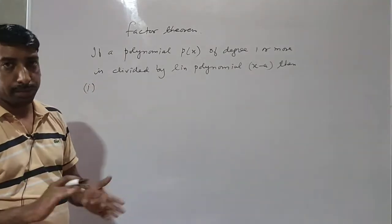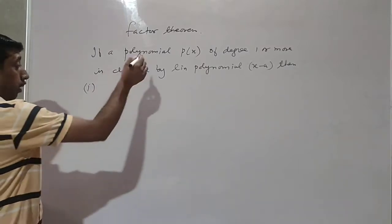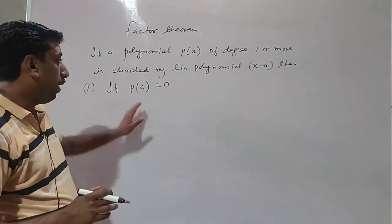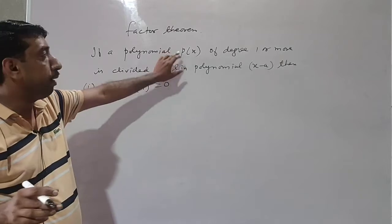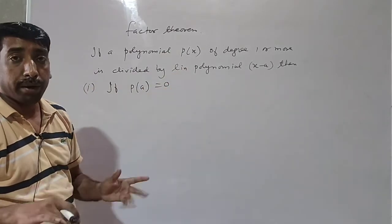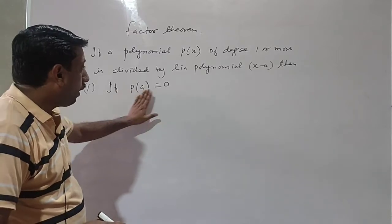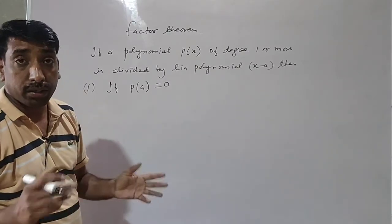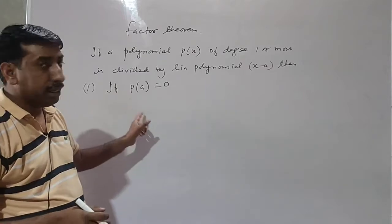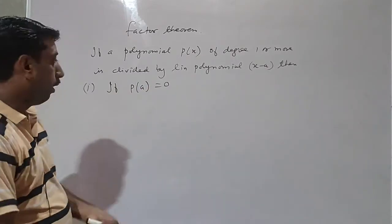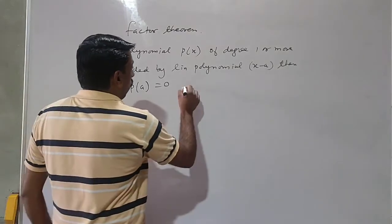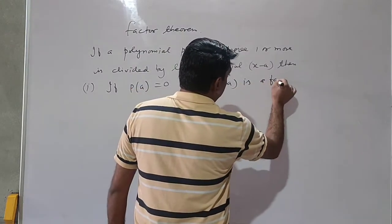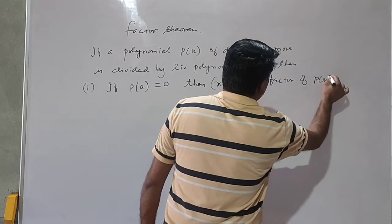First condition: if P(a) equals zero — that is, the remainder is zero — then x minus a is a factor of P(x). If we divide a polynomial by another polynomial and the remainder is zero, then we can say the divisor is a factor of the dividend. So if P(a) equals zero, then x minus a is a factor of P(x).